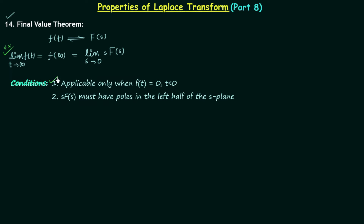The conditions which must be satisfied to use this theorem: condition number one is the same as the condition we had in the initial value theorem. According to this condition, the signal f(t) must be equal to zero when t is less than zero. We will check this condition only when the region of convergence is given. When the region of convergence is not given, we will assume the condition is satisfied.